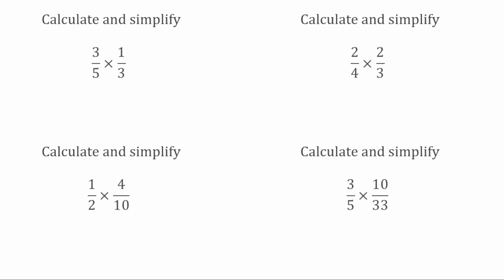We start with the 5 and go across to the numerator, which is 1. The highest common factor of 5 and 1 is 1, so I can't cancel these down. Now looking across the other way, I've got 3 and 3. The highest common factor of 3 and 3 is 3 itself, so I can divide both of these numbers by 3. 3 divided by 3 gives 1, so both of these become 1.